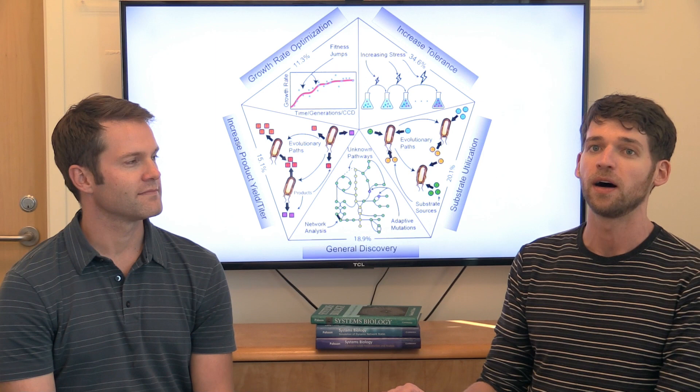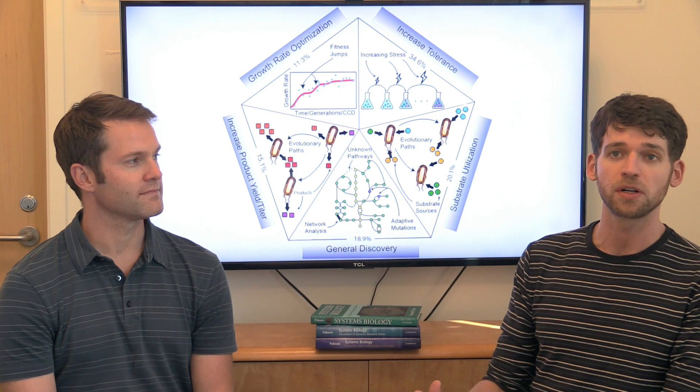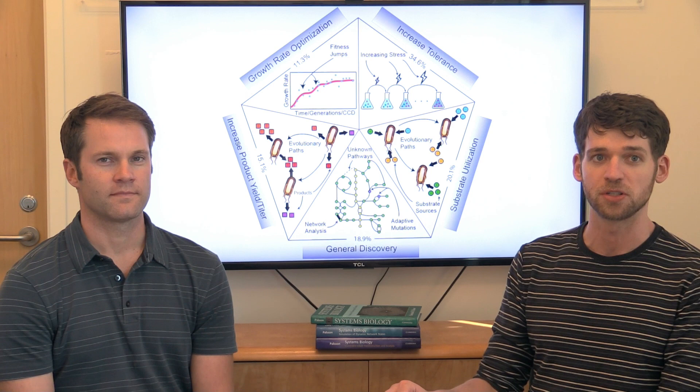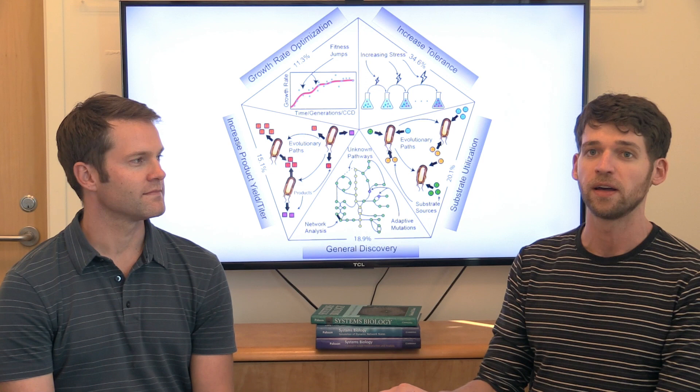You can also increase tolerance to various compounds. So if you design a strain to produce some chemical and you want it to produce a lot of it, in its natural environment in the wild it's not exposed to that chemical in high concentrations and so often that will induce some stress into the cell that causes it to grow poorly and you can tolerize them through ALE to get much better growth in the presence of a stress.